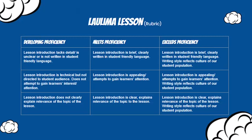There are many ways to do rubrics, and I should emphasize this is just one example. In this particular one, there are three levels of proficiency. 'Developing' would be where the student's work is not quite there to show they've met the criteria for proficiency. 'Meets proficiency' would be that they've done everything needed to demonstrate they understood the concept. And then 'exceeds proficiency.' Let's go through that first row: the lesson introduction lacks detail, is unclear, or is not written in student-friendly language — that's the developing level.